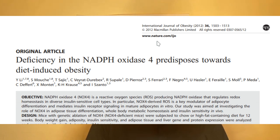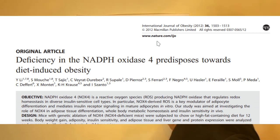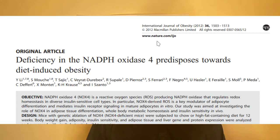The paper is called Deficiency in the NADPH Oxidase 4 Predisposes Towards Diet-Induced Obesity. NADPH oxidase 4 is just NOX4 that I already told you about. This paper really nicely shows a lot of the principles that I talk about on my blog Fire in a Bottle.